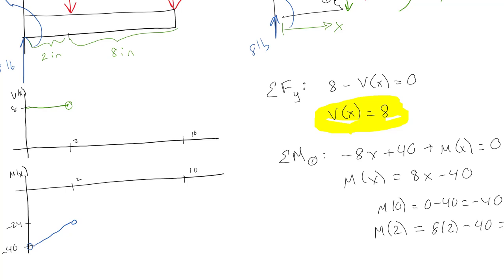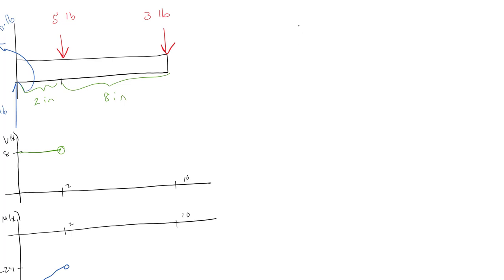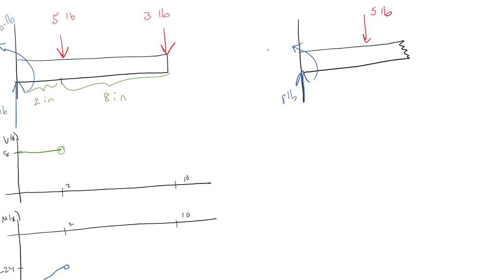Now I'm going to do this again for the next section — past the 5 pounds but before the 3 pounds. I've got my reaction forces and now I'm measuring all the way from the left end. I've got shear as a function of x, normal is zero, and the reaction moment as a function of x. I'll call the cut point number 2.